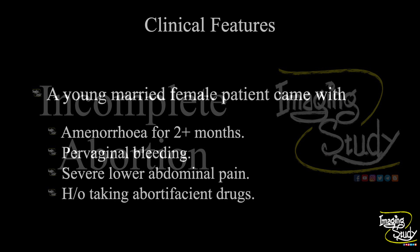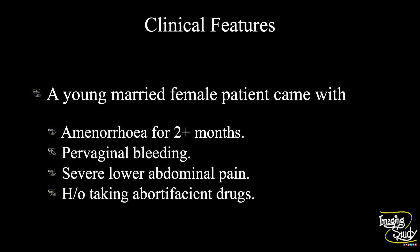Hi everyone, welcome to Imaging Study. Today we are going to see a case of incomplete abortion. A young married female patient came with amenorrhea for more than two months. She had complaints of pervaginal bleeding and severe lower abdominal pain for one day. She had also given history of taking abortifacient drugs.